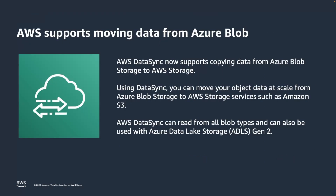With support for Azure Blob Storage, you can now use DataSync to easily move data the same way you would with other supported locations. DataSync can read from all Azure Blob types and also supports Azure Blob containers configured for data lake storage generation 2. Using DataSync, you can move your data quickly and securely from Azure Blob to Amazon S3, Amazon EFS, or Amazon FSx file systems. When moving data from Azure Blob to Amazon S3, DataSync preserves object tags and metadata.